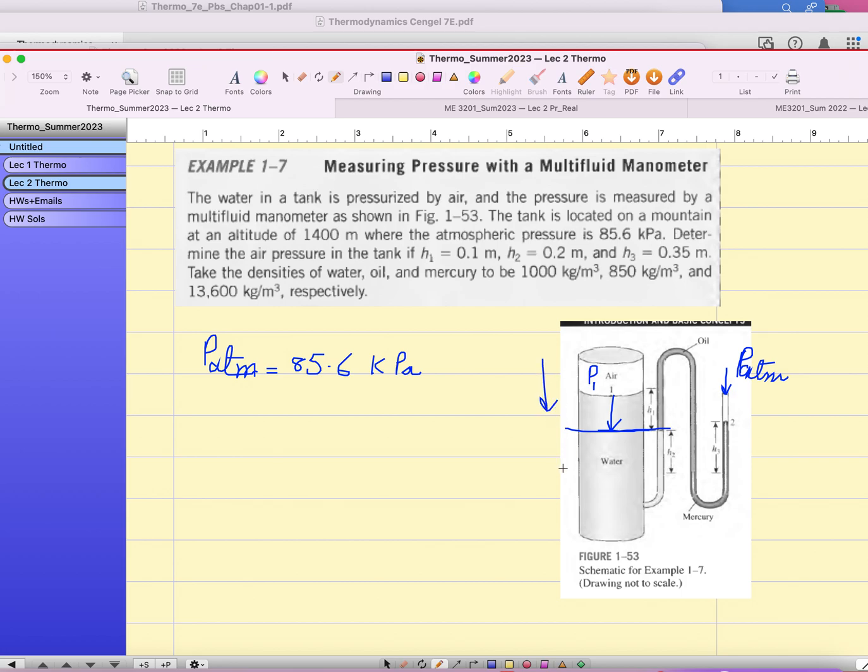So remember, pressure equals to ρgh. This is the main formula for pressure. So let's start from this side, from this side. Okay, so right now this is enclosed, the air is not open, this tube is not open to the pressure. So the left hand side is p1.